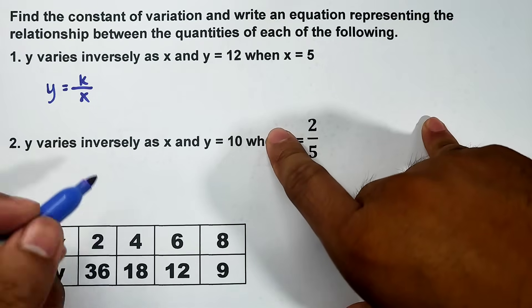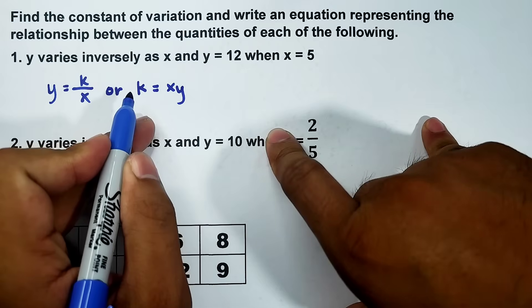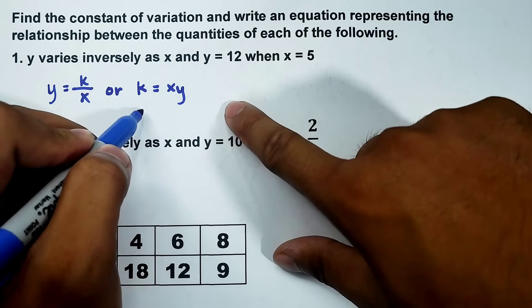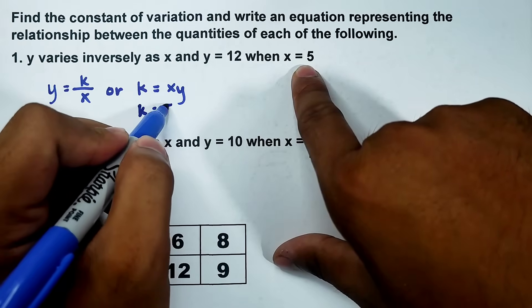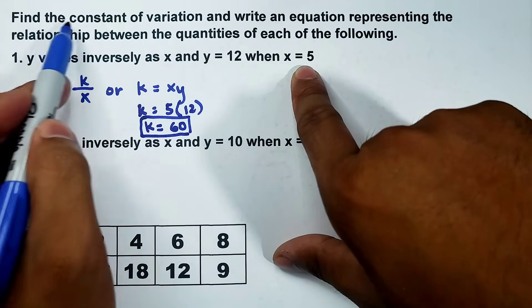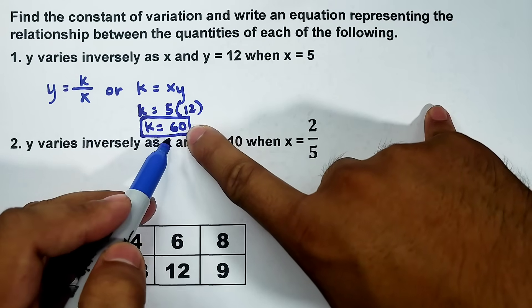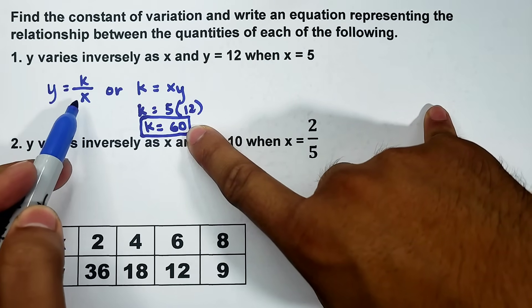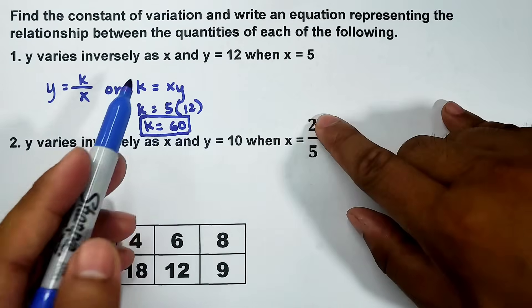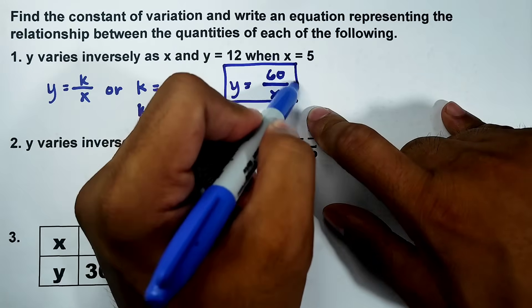Let's start with number one. Y varies inversely as x. Basically what you need to do is create an equation. Since y varies inversely as x, that is y equals k over x. What we need here is the constant and equation. In inverse variation, we have the formula k equals xy. This is what we'll use. Y equals 12 when x equals 5. To find the value of k, k equals 5 times 12, which equals 60. This is our constant. Lastly, write an equation representing the relationship. Since the value of k is 60, go back to the main equation y equals k over x. Replace k by this value, and it becomes y equals 60 over x. This is the answer for the equation.